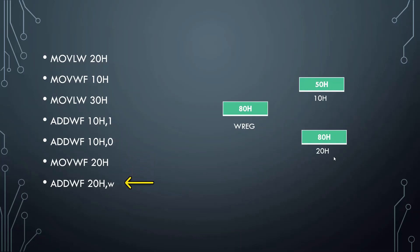Now we add the value present in WREG and register 20h. The sum is 100h in hexadecimal format. The result is stored in WREG since we have 'w' here, so WREG changes to 100h.